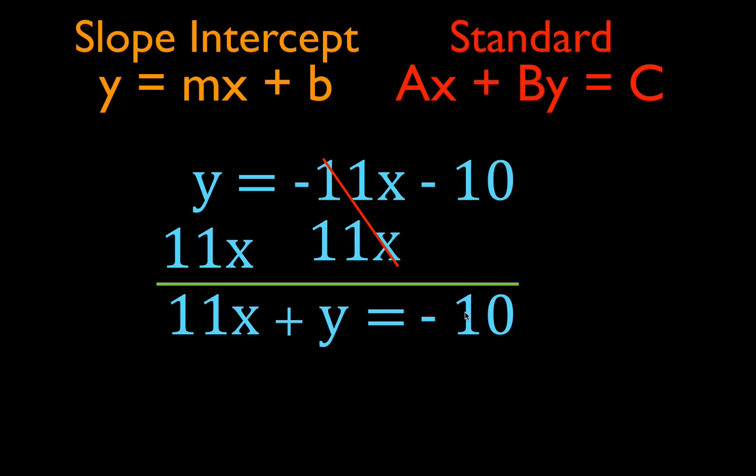So you can do those pretty easily by following two steps: Step 1, if the slope is a fraction, multiply by the denominator. Step 2, add the opposite of the x-term to both sides. And you will end up with the standard form ax plus by equals c. Thank you very much for watching — if you found that helpful, subscribe to my channel for all my chemistry, physics, and math videos, give the video a thumbs up, and leave a positive comment below.